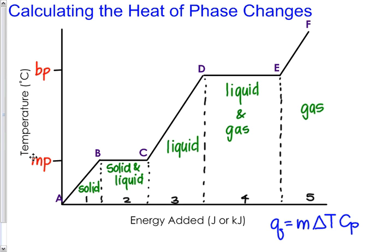However, if you look at our flat sections, sections two and four, that formula will not work because the delta T would be zero. Anything times zero is zero. It would imply that it does not take heat to melt or boil, and we know it does. So we're going to examine what formula can we use in place of the other one.